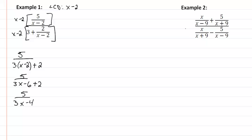In our second example we have x minus 9 and x plus 9, so our LCD is x minus 9 times x plus 9. We need to multiply each fraction by that.